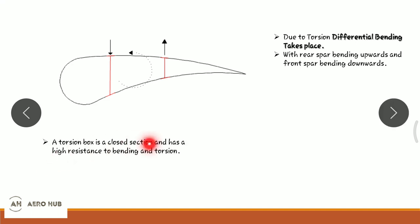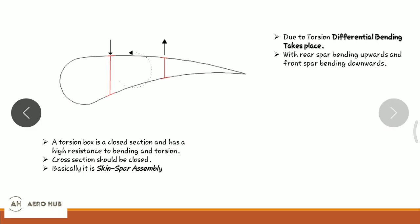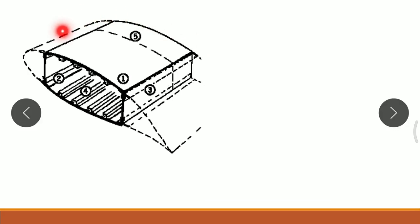A torsion box is a closed section that can resist both bending and torsion. For aircraft we cannot use a cylindrical section because it cannot withstand the bending load, so we use a closed section effective in withstanding both torque and bending. Basically, a torsion box is an assembly of the wing skin and spar, consisting of: skin, spar cap, spar web, stringers, and ribs.